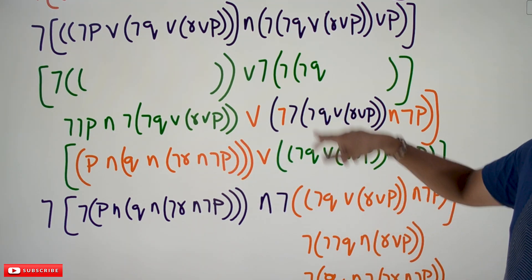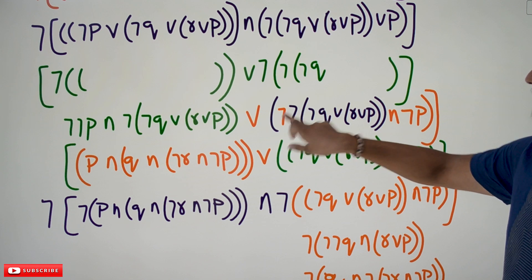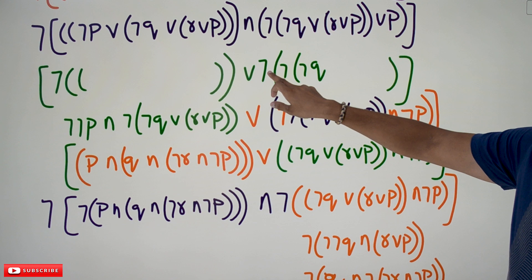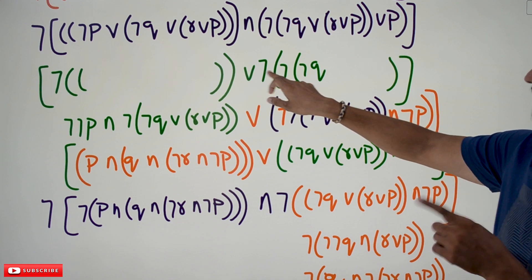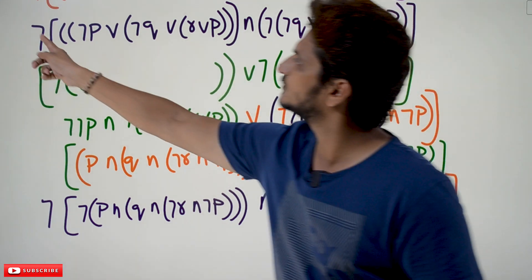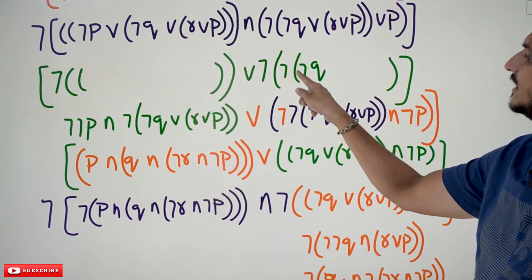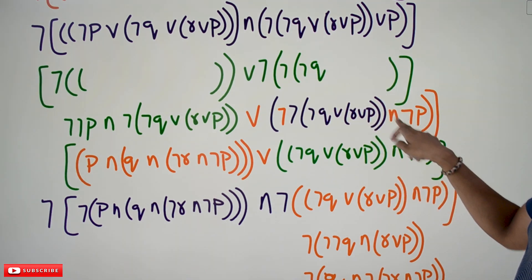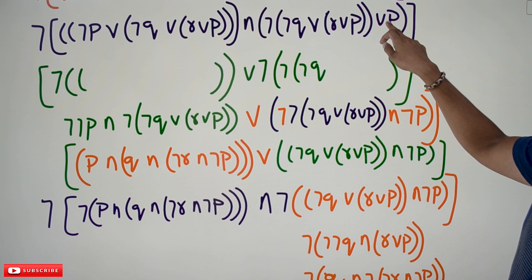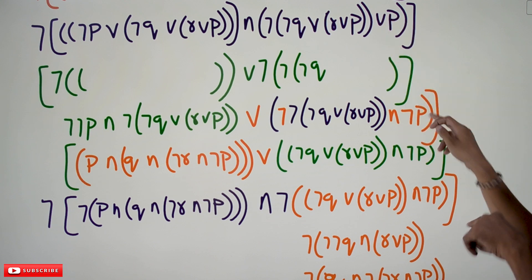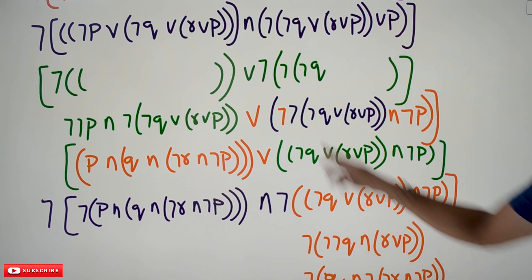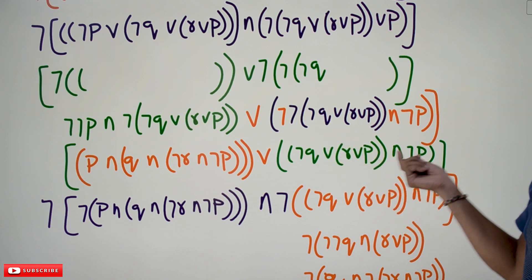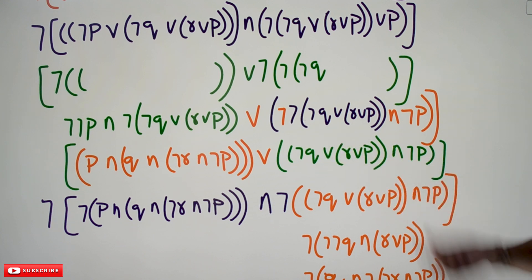The same De Morgan's formula is applied: the negation is taken inside. Negation of (negation x conjunction disjunction negation p) — negation negation cancels, leaving us with the remaining expression, disjunction conjunction negation p. So the negations cancel and we are left with the equation containing disjunction and conjunction with negation p.